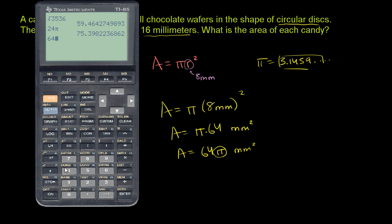So we could say 64. You could just say 64. If you wanted a very rough one, you could say 64 times 3.14, which would give you 200.96 millimeters squared.